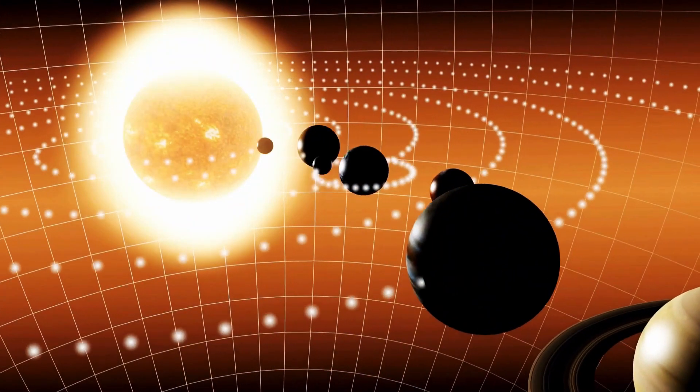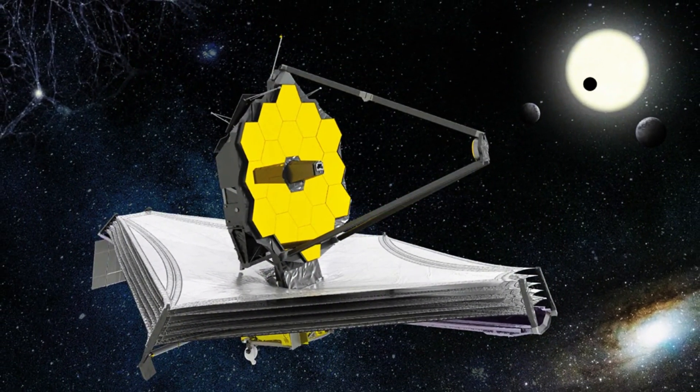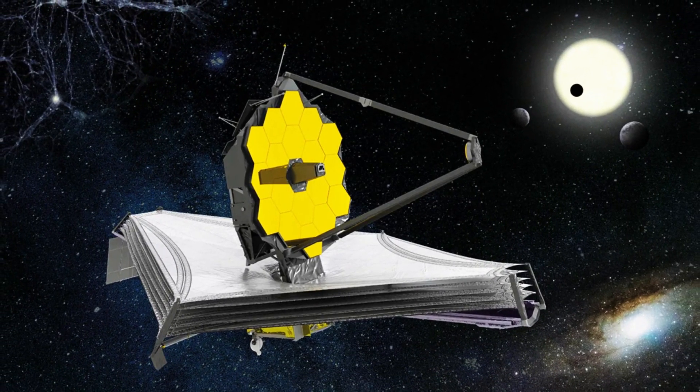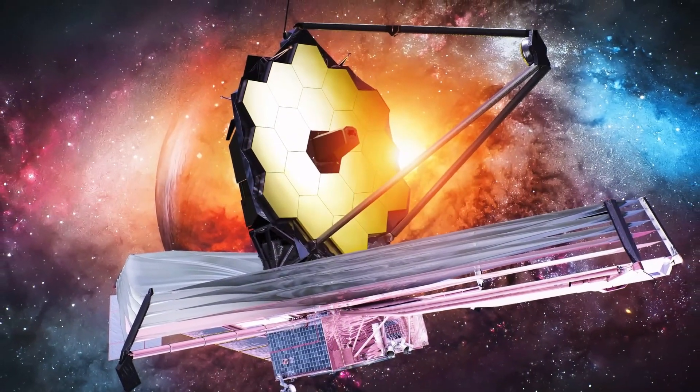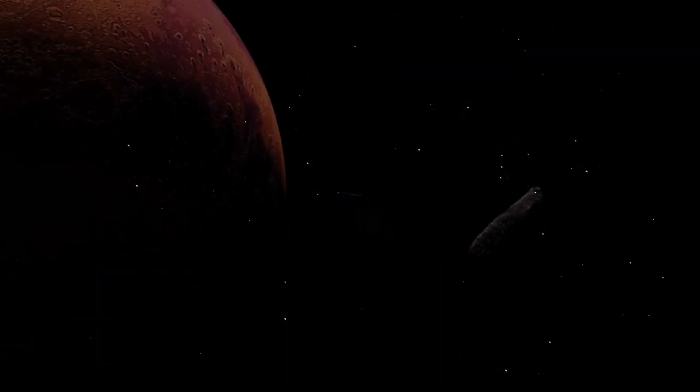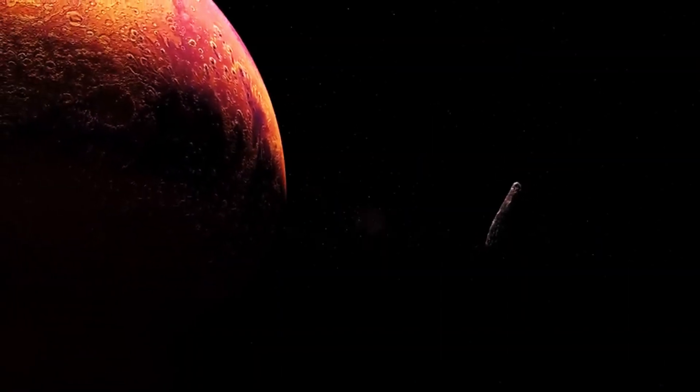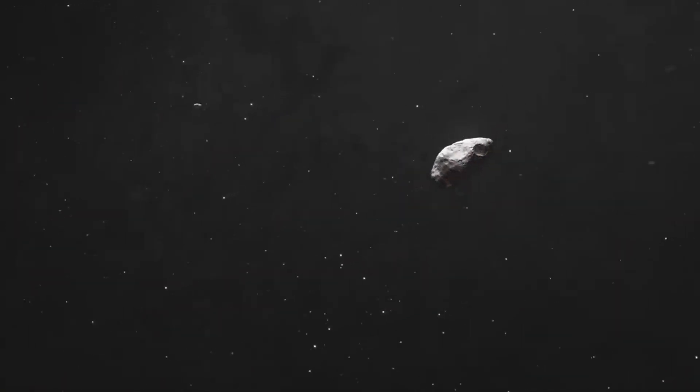Could this be evidence of advanced alien technology, like a solar sail using light pressure to navigate space? Though this idea is controversial, the Webb telescope's observations offer new possibilities. Webb's data indicates that reflective materials might be present on Oumuamua's surface, potentially explaining its unusual acceleration. However, whether these materials are natural or artificial remains an open question for further research.